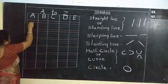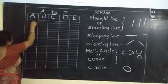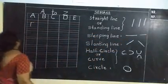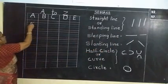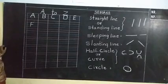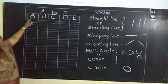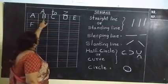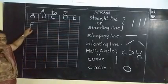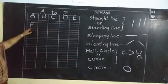For F, draw one straight line from red line to blue line. At the top, one sleeping line, and on the first blue line a small sleeping line. This is capital F. Capital A, B, C, D, E, F. F after G. For G, we use a right half circle, then a sleeping line, then down one small straight line. This is capital G.